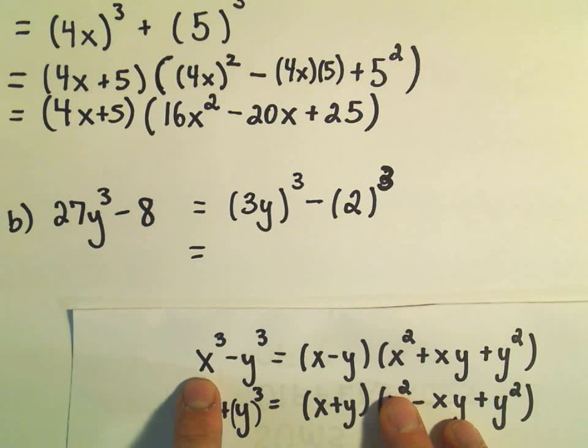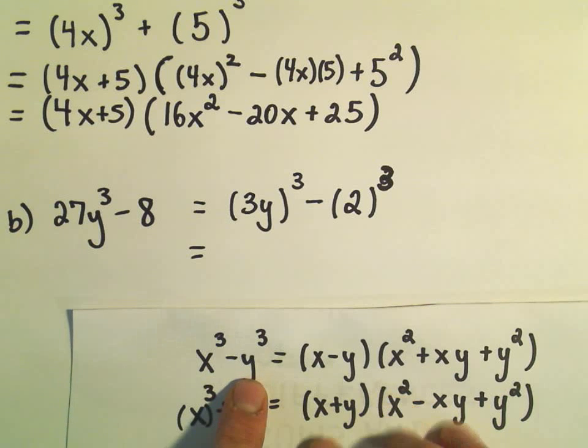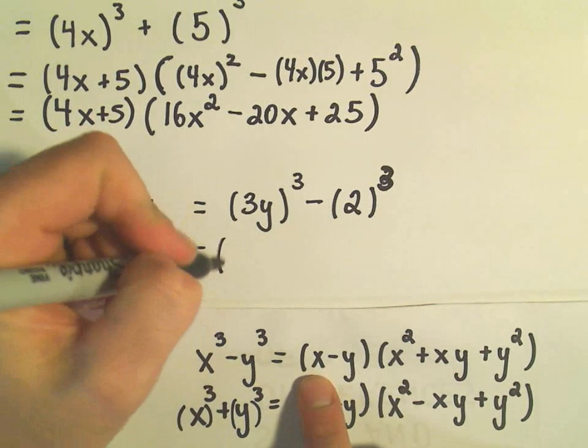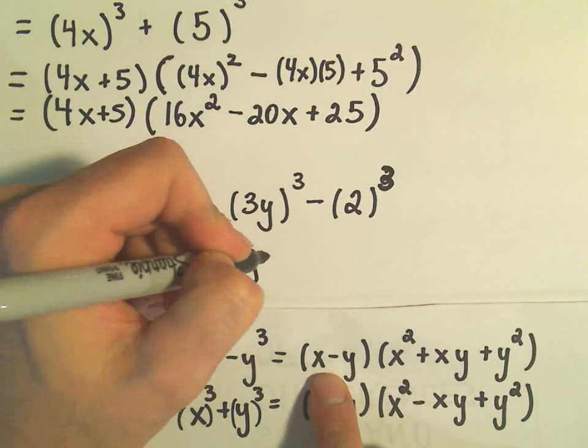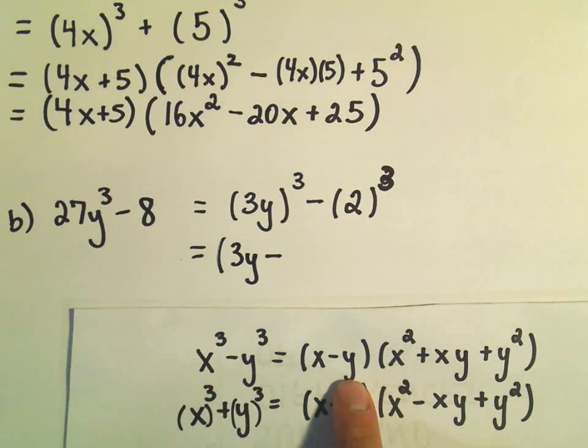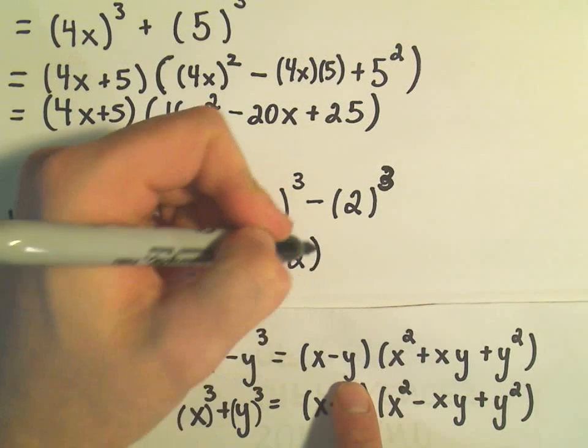And it says if you have something cubed minus something cubed, whatever was being cubed, so kind of whatever's downstairs, write that first. So we'll get a 3y. Then it says write a minus sign. And it says whatever was also being cubed, just stick that next to it. So we'll just drop our positive 2 down.